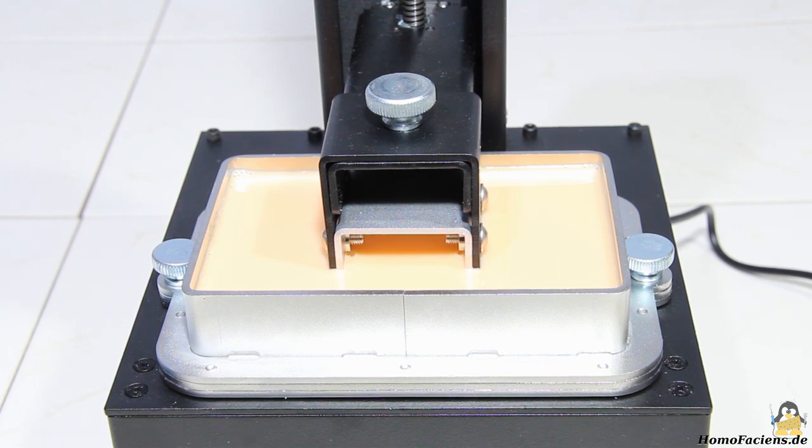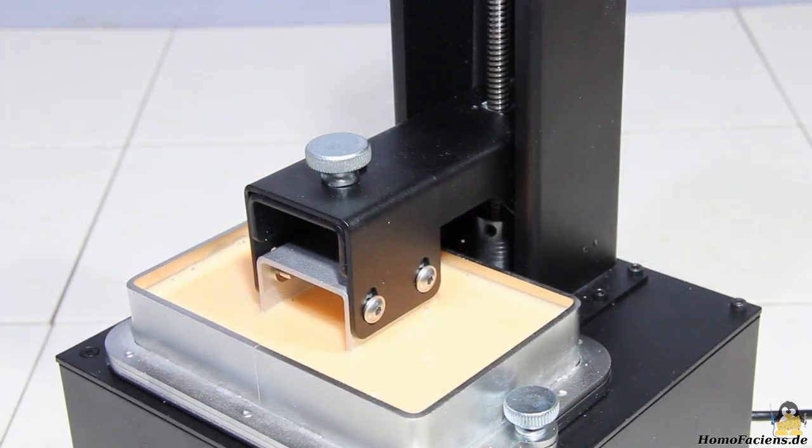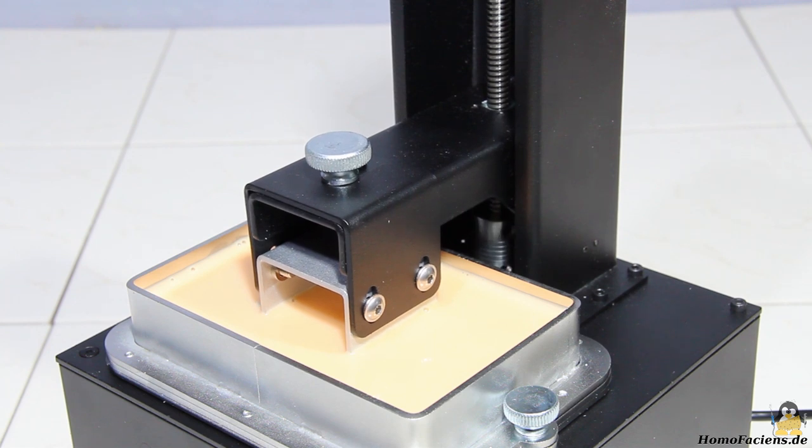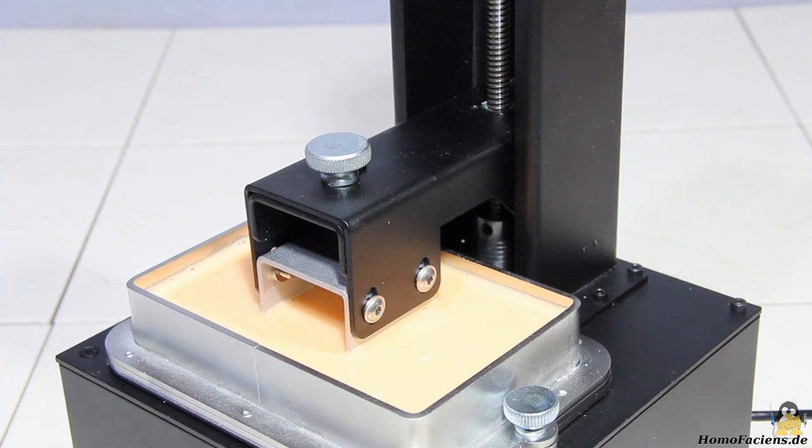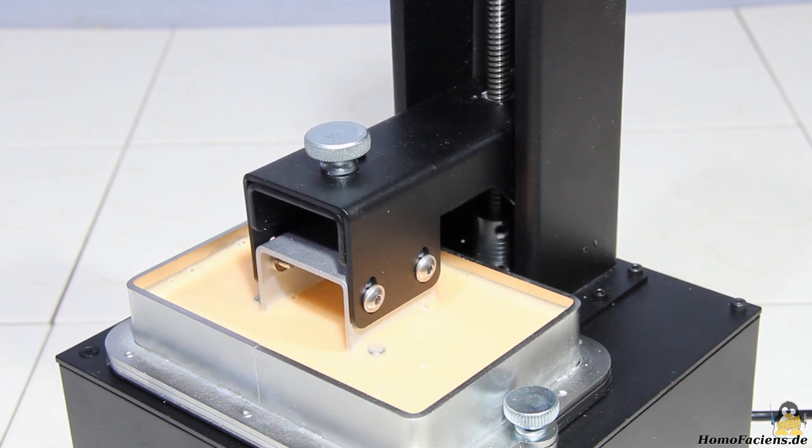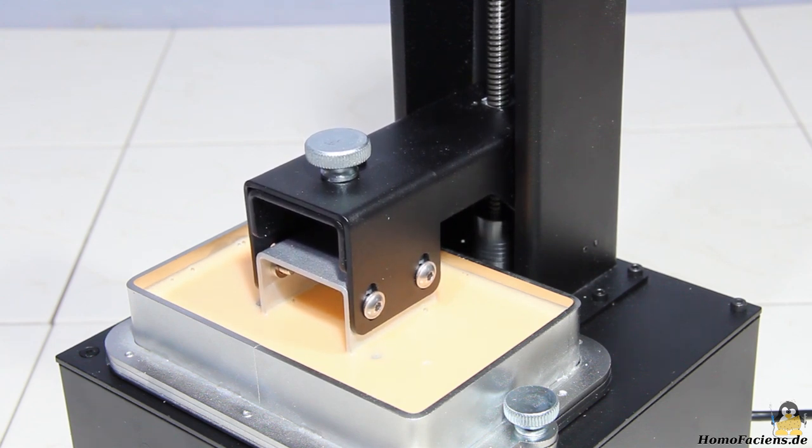The first four layers of the print are processed with an exposure time of 80 seconds. Before the next layer is exposed, the build plate first moves up a few millimeters and then down to the set height of the next layer. This is necessary to detach the hardened resin of the bottom layer that sticks to the plastic foil on the bottom of the tank. After the first layers have been processed, the printer shifts into higher gear, the exposure time is now only 6 seconds.